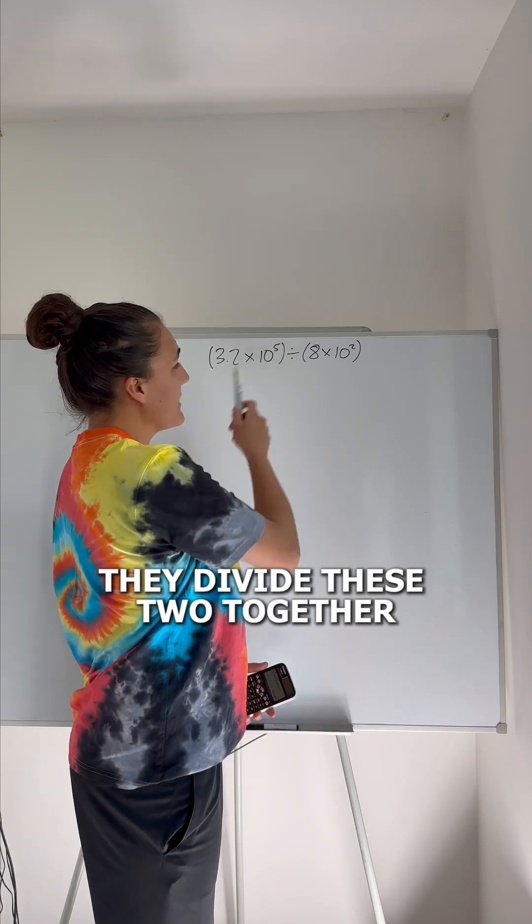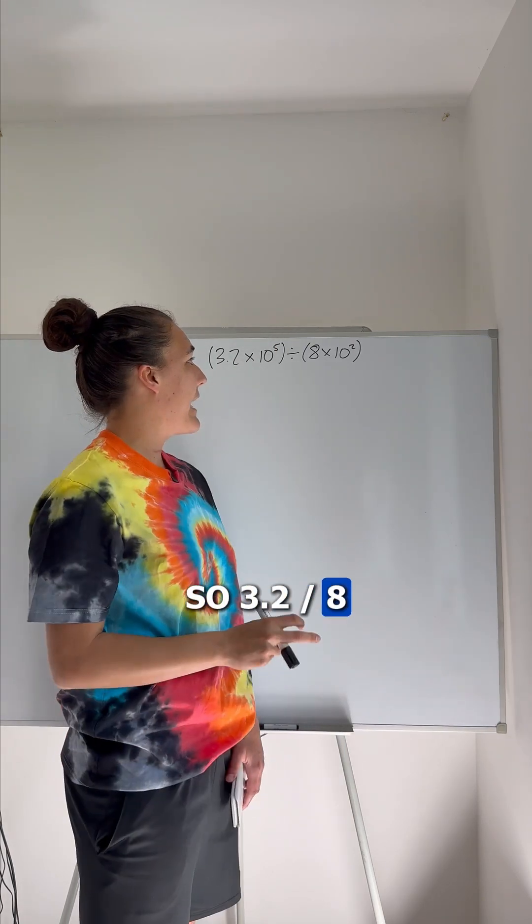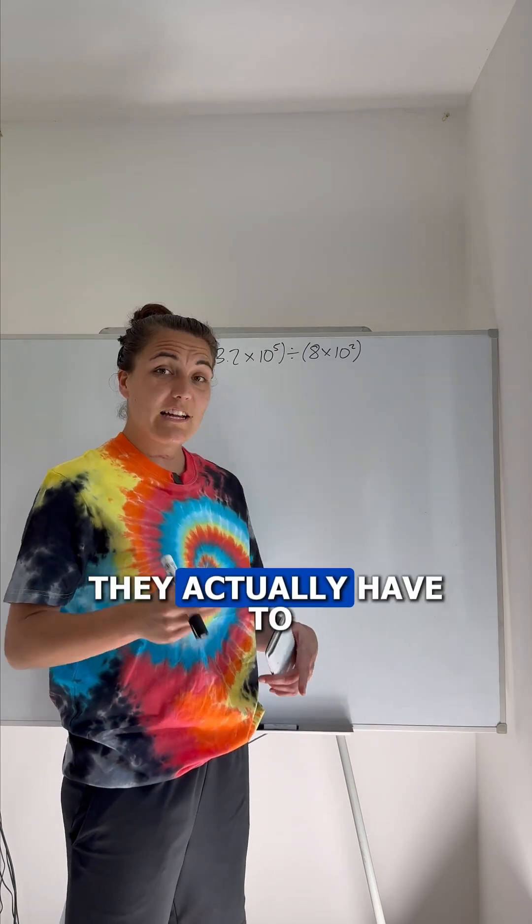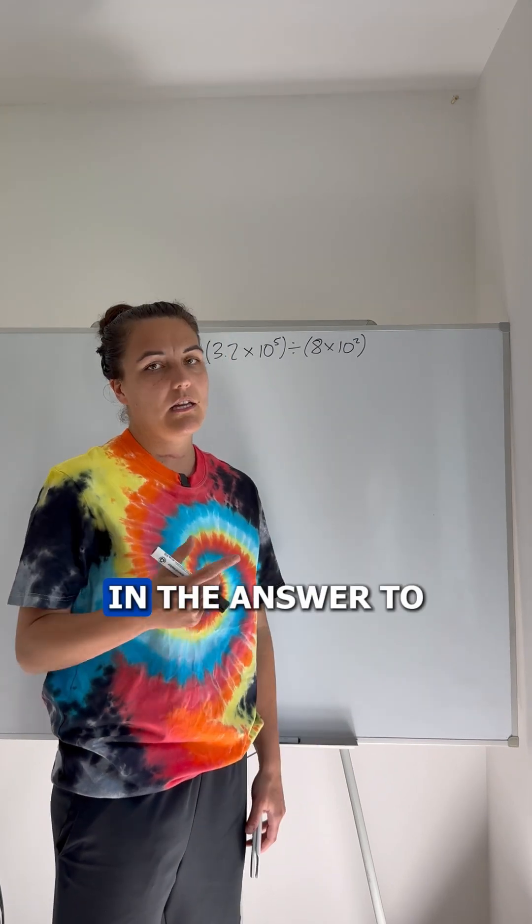The other thing people do is they divide these two together. So 3.2 divided by 8, they get 0.4. And they don't realize they actually have to change that to get the marks in the answer.